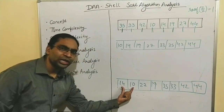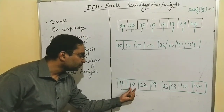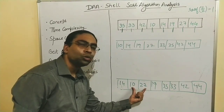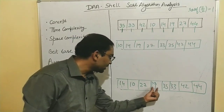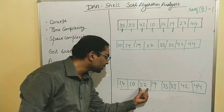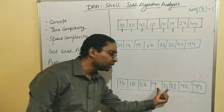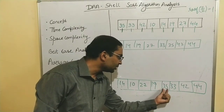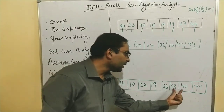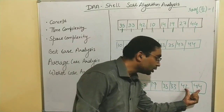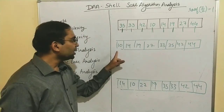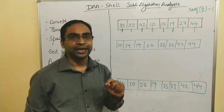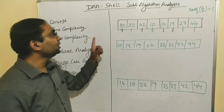During the final Insertion Sort pass: 10 and 14 are swapped to the correct positions; 14 and 27 require no swap; 27 and 19 are swapped; 27 and 35 require no swap; 35 and 33 are swapped; 35 and 42 require no swap; and 42 and 44 require no swap. This yields the sorted array.